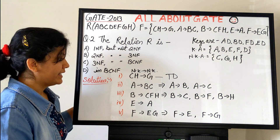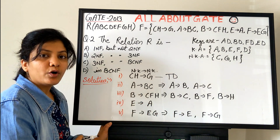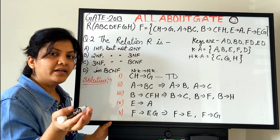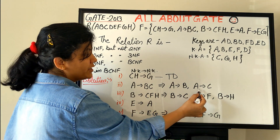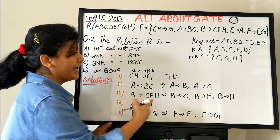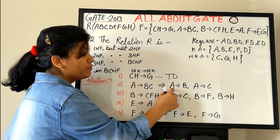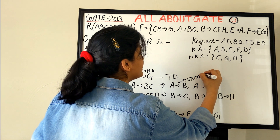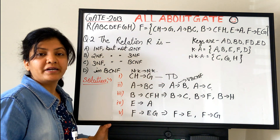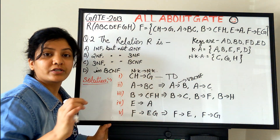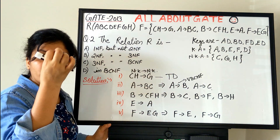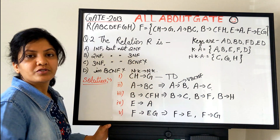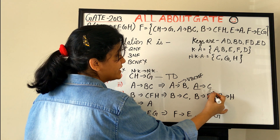Now A→BC: by decomposition, A→B and A→C. A and B are both key attributes, so A→B is not a partial dependency but it is a BCNF violation (part of a key determining part of a key, not a complete key). We already have a transitive dependency, so the relation is not in 3NF, and we also have BCNF violations, so those options are ruled out.